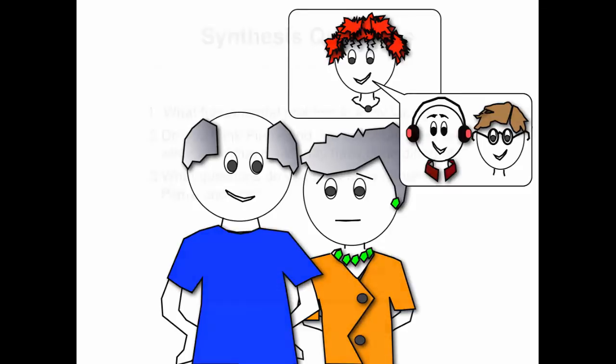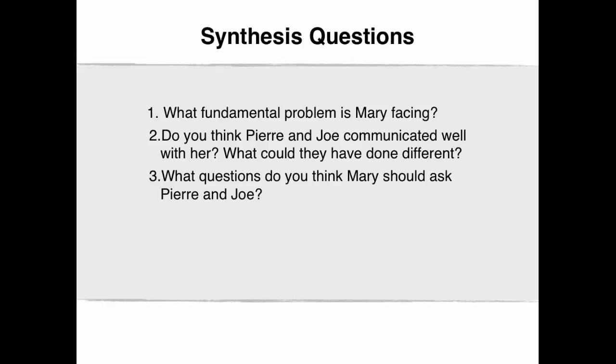The synthesis questions for this video are as follows: What fundamental problem is Mary facing? Do you think Pierre and Joe communicated well with her? What could they have done different? And finally, what questions do you think Mary should ask Pierre and Joe?